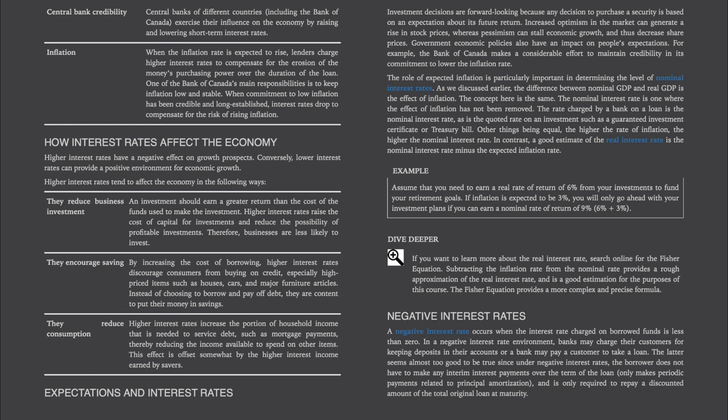Here's an example. Assume that you need to earn a real rate of return of 6% from your investments to fund your retirement goals. If inflation is expected to be 3%, you will only go ahead with your investment plans if you can earn a nominal rate of return of 9%. Subtracting the inflation rate from the nominal rate provides a rough approximation of the real interest rate. The Fisher equation provides a more complex and precise formula.